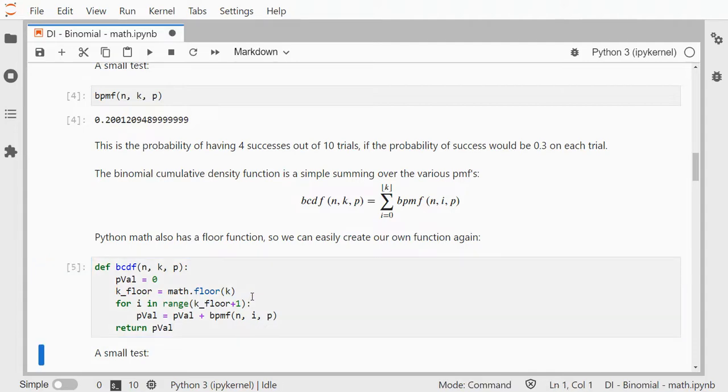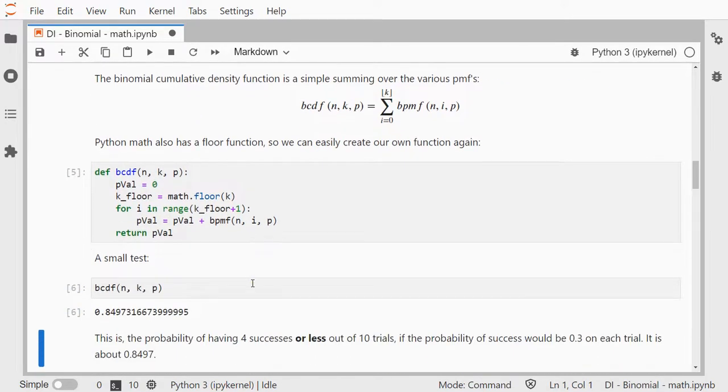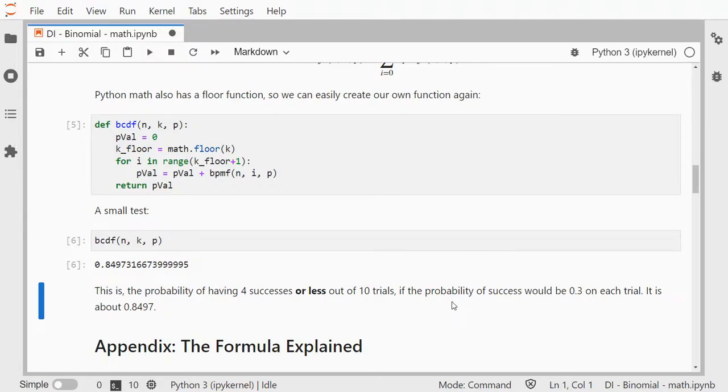So we can use a small test for this and apparently it's 0.8497 which is therefore the probability of having 4 successes or less out of 10 trials if the probability of success would be 0.3 on each trial. And that's how you can come up with a binomial probability mass function and cumulative function.